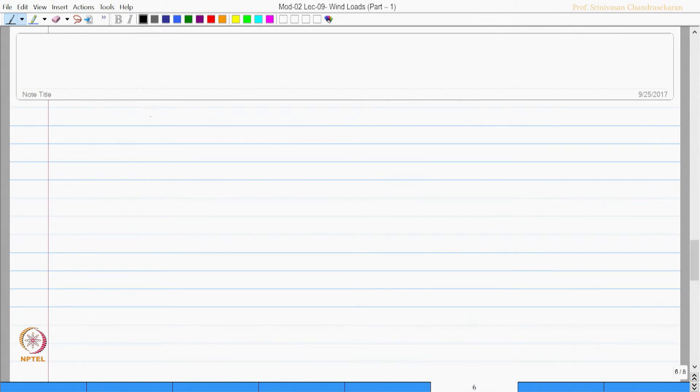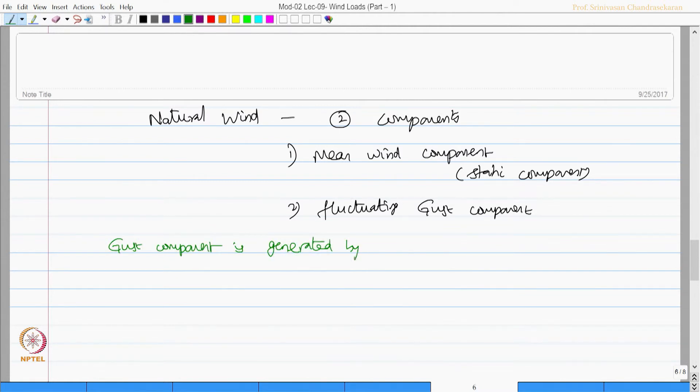Natural wind has two components: the mean wind component which is static, and the fluctuating gust component. The gust component is generated by turbulence in the flow field, happening in three spatial directions. But in offshore locations, the mean wind speed is much greater than the gust component.